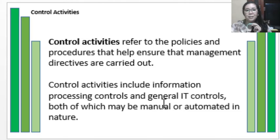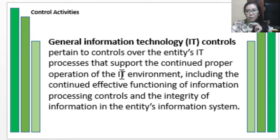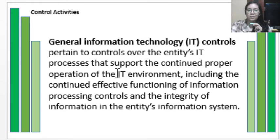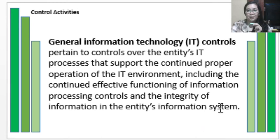Control activities include information processing controls and general IT controls, both of which may be manual or automated in nature. General information technology controls are the controls over the entity's IT processes. They support the continued proper operation of the IT environment, including the continued effective functioning of information processing controls and the integrity of information in the entity's information system.